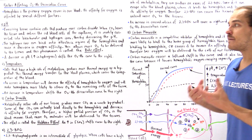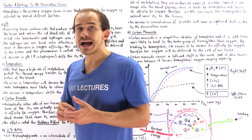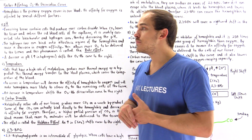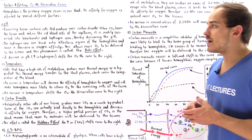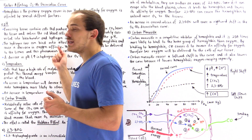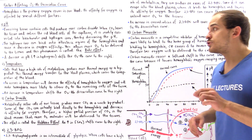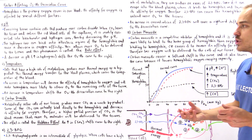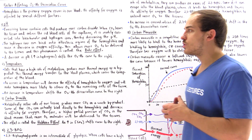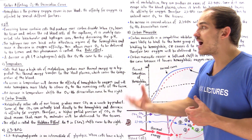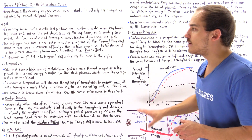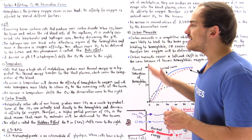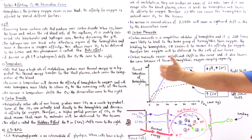Hydrogen ions can bind onto special allosteric sites found on hemoglobin, and by doing so they effectively decrease the affinity of hemoglobin for oxygen. That means hydrogen ions make it much more likely that hemoglobin will release oxygen, so more oxygen is released into the cells of our tissues. This phenomenon is known as the Bohr effect, which shifts the entire curve to the right.